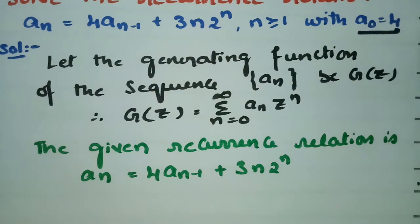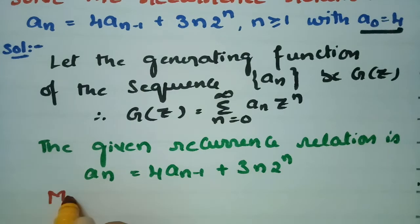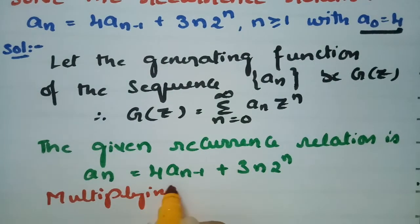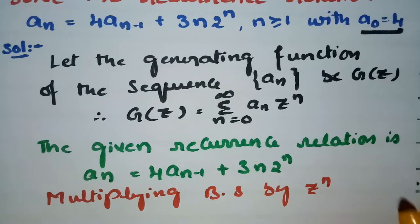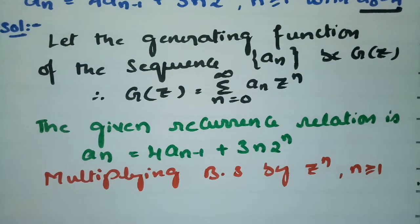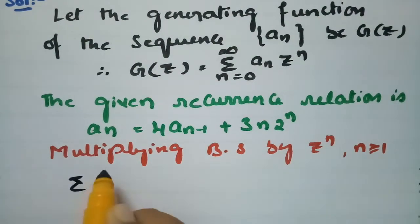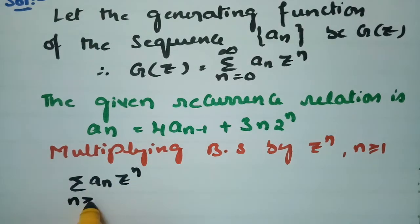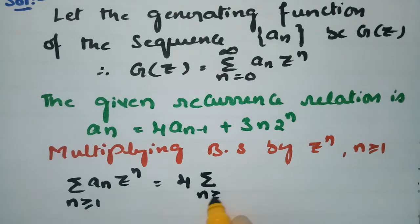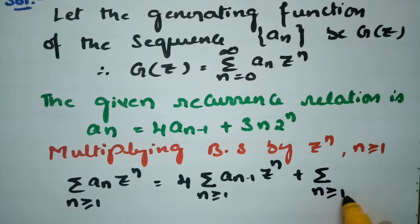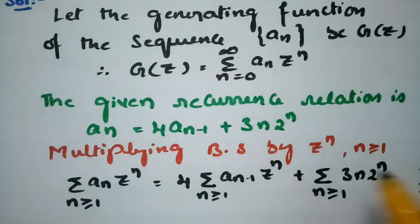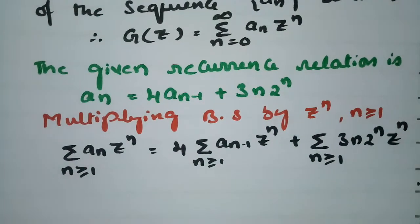Now I am going to multiply both sides by z^n for n ≥ 1. So this will become: Σ (n≥1) a_n · z^n = 4 · Σ (n≥1) a_(n-1) · z^n + Σ (n≥1) 3n · 2^n · z^n.